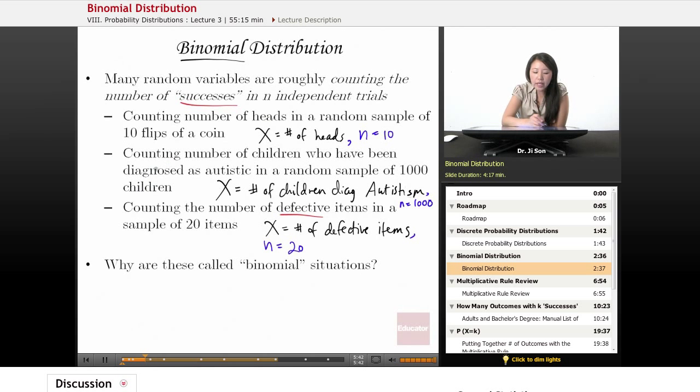Here, it's either the probability of being diagnosed as autistic and the probability of not getting that diagnosis. There's only those two outcomes. And here, it's either being defective or not being defective. It's one or the other of those two outcomes.